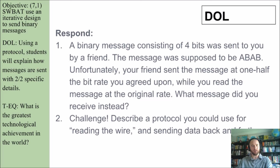Your exit ticket for the day: a binary message consisting of four bits was sent to you by a friend. The message was supposed to be ABAB. Unfortunately, your friend sent the message at one-half the bit rate you agreed upon. While you read through the message at the original rate, what message did you receive instead? And the challenge: describe a protocol you could use for reading the wire and sending data back and forth.